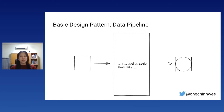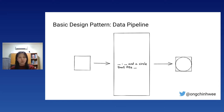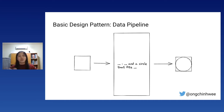As a data engineer, what we typically do is build data pipelines. When we talk about data pipelines, we think about all those complex pipelines, but fundamentally we need to look at the basic design pattern: you have an operation, and a target output. For example, given a square, I apply an operation to fit a circle inside it, and the output is the square with the circle that fits it.